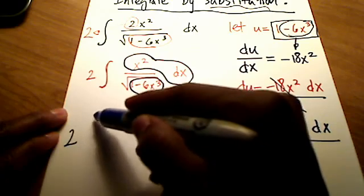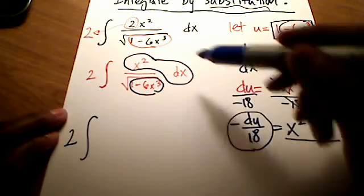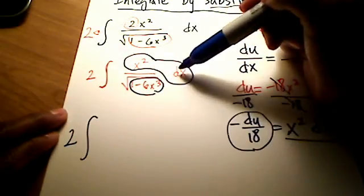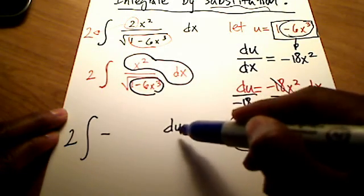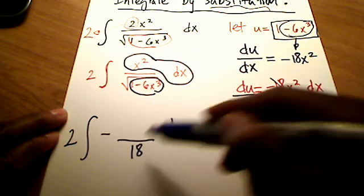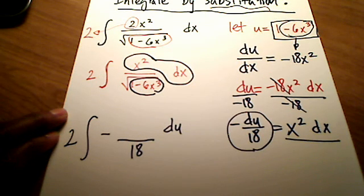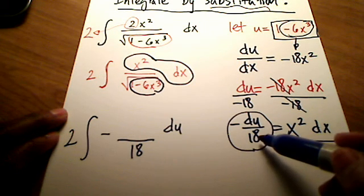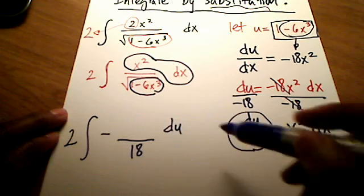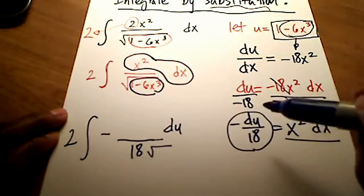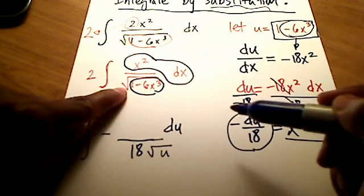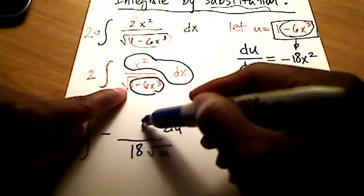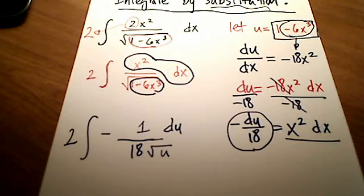I've got a 2 out front. And it's the integral of, and in place of this bubble, I'm putting in a negative du all over 18. Hope that makes sense. That's just this thing right here. And I also have, maybe I didn't leave enough room for myself, I also have in the denominator the square root of u. And nothing is left in the numerator. So I'm just going to write it as a 1.